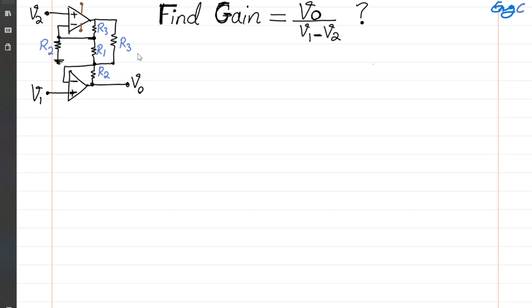We're going to utilize that virtual short, and then we're going to utilize superposition — meaning we're going to compute the output as a function of V1 once, compute the output as a function of V2, and then add them together using superposition.